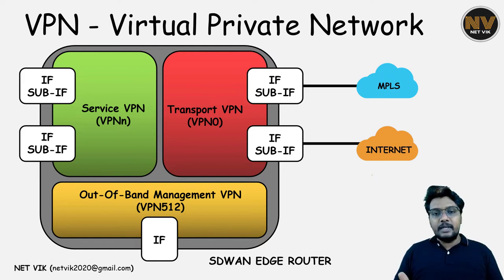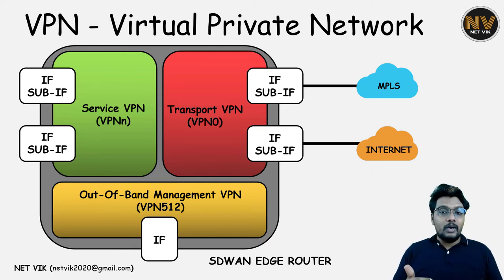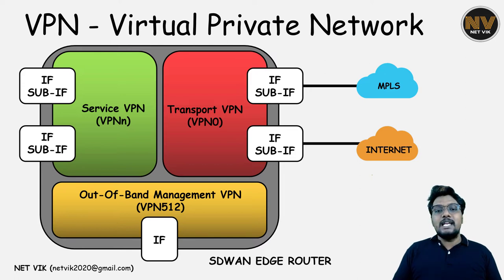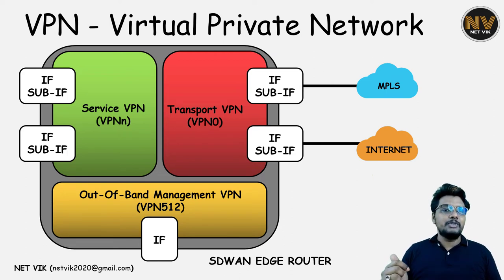The service VPN numbering can range from 1 to 511. This does not mean we can create 511 service VPNs in our router — the routers, depending on hardware or license, can support only a limited number of service VPNs. But you are free to use any number between 1 and 511 for them.